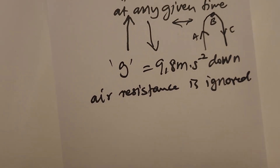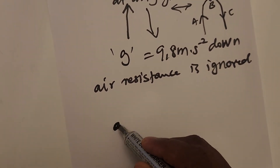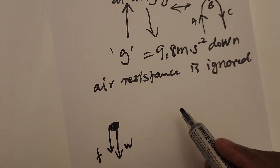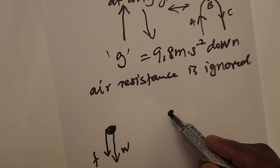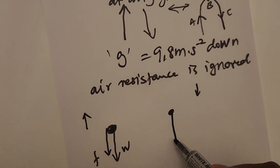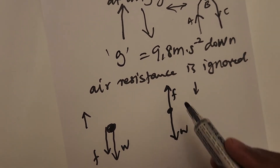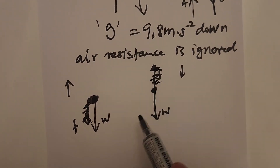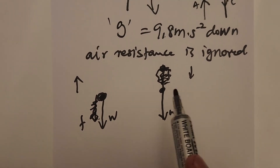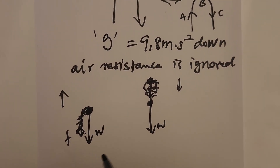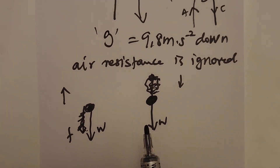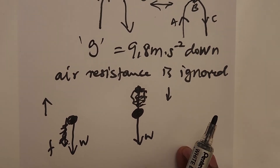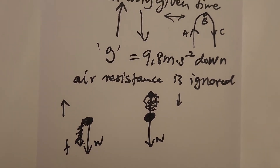When the object is going up, a free body diagram shows it experiences weight and air friction. When going down, it experiences weight downward and friction upward. If we ignore air resistance, the only force acting on the projectile is gravity — that is why we call it a projectile: when the only force acting on it is the gravitational force.